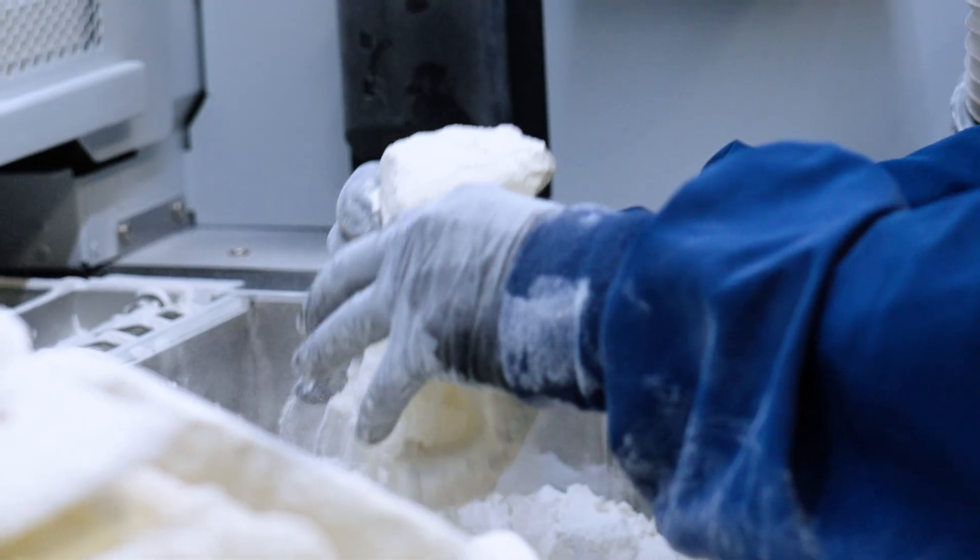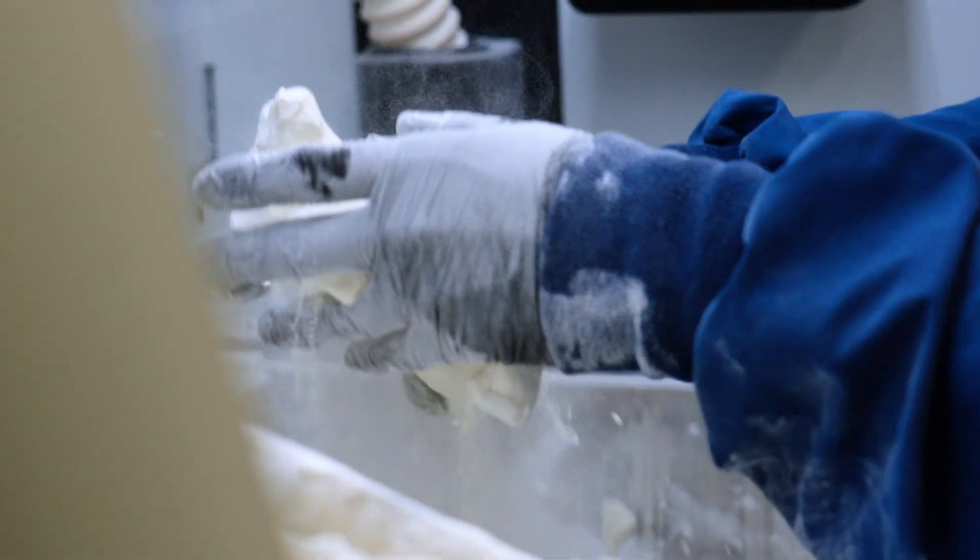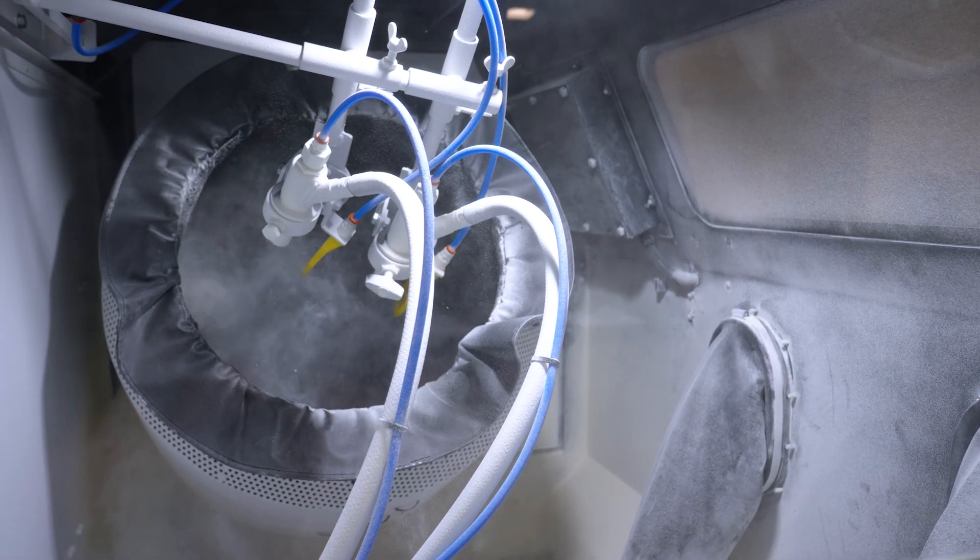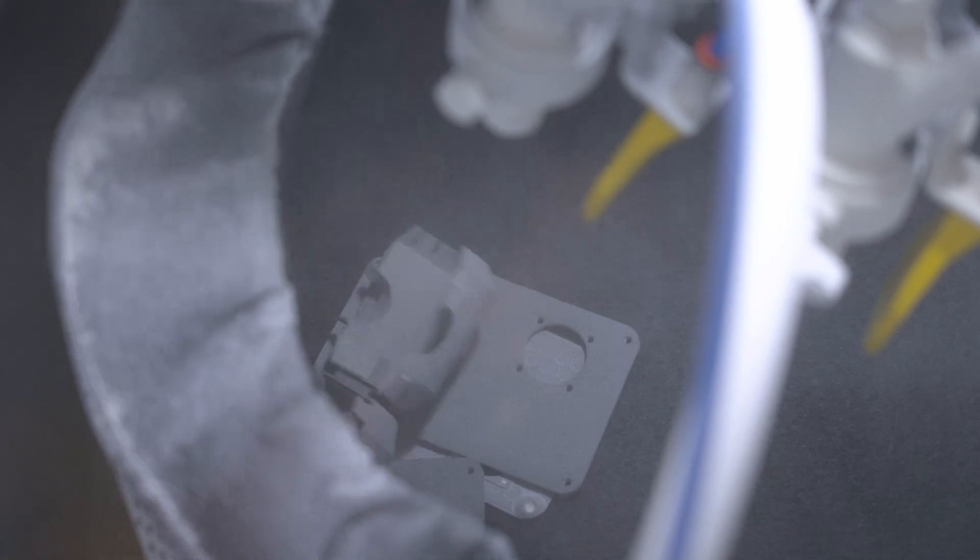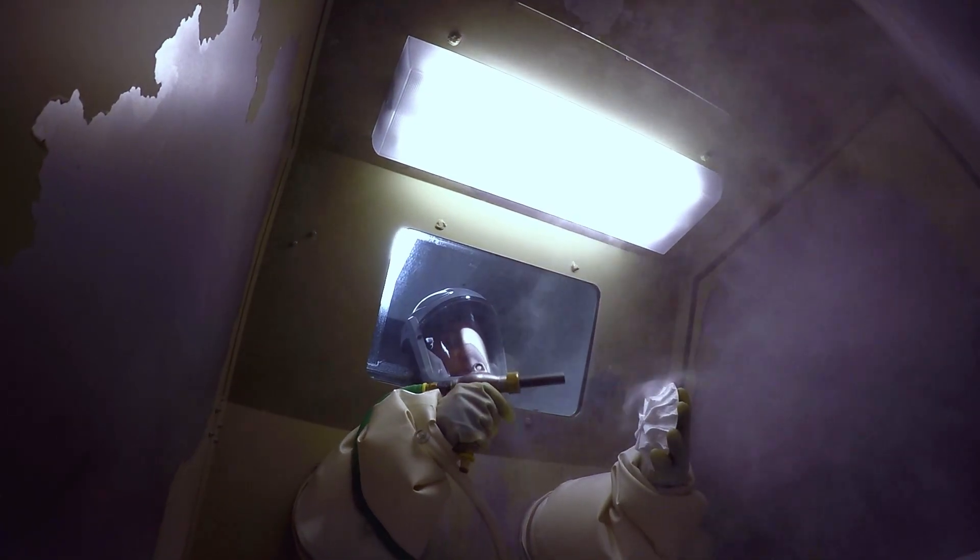After SLS parts are built, they move to the breakout station, where our technicians remove the parts from the powder cake and bead blast the final parts to remove excess material.